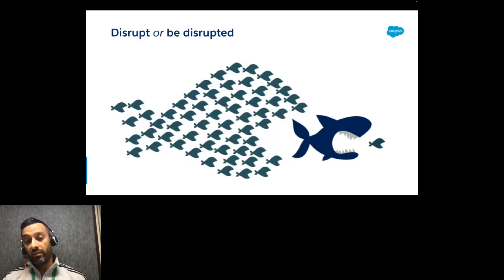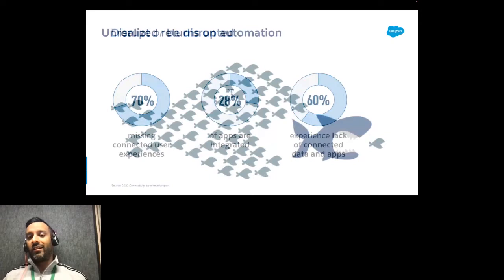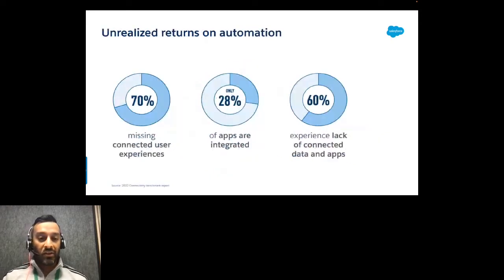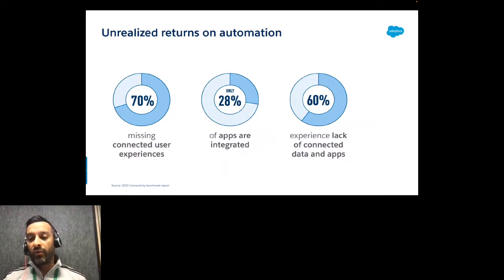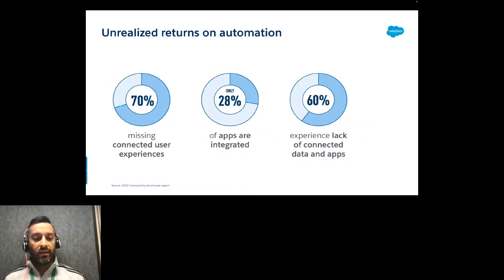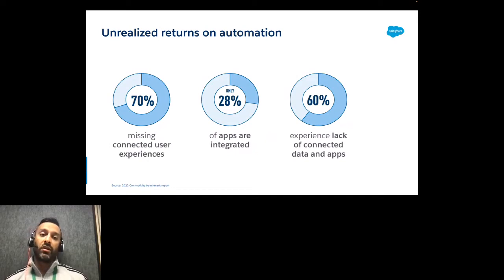To be on the disruptor side, you need to free up the creative minds in your organization to invest in innovation. One key element is using automation. This isn't new — automation has existed for 20-30 years in some form, and RPA has become very relevant and hyped in the last 10 years. But there is still an unrealized promise on automation.